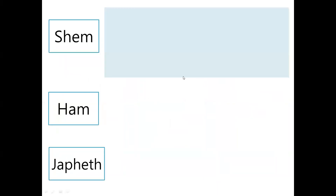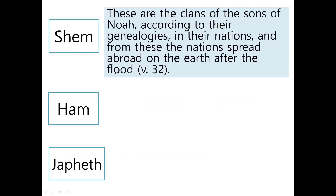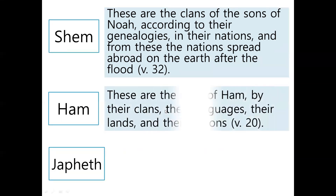When the Bible talks about Shem's family, the last verse says: 'These are the clans of the sons of Noah, according to their genealogies in their nations.' And from this, the nations spread abroad on the earth after the flood. So after the flood, Shem's children scattered on earth, as God commanded.